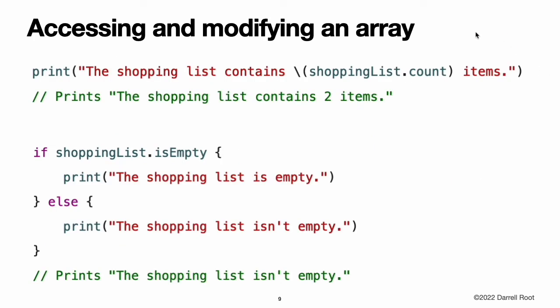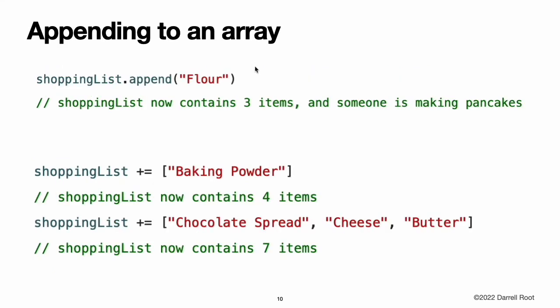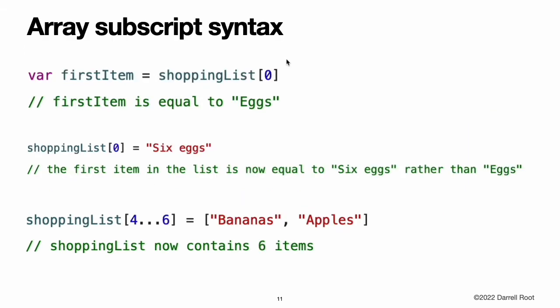Accessing and Modifying an Array. You can access and modify an array through its methods and properties or by using subscript syntax. To find out the number of items in an array, check its read-only count property. Use the boolean isEmpty property as a shortcut for checking whether the count property is equal to zero. You can add a new item to the end of an array by calling the array's append method. Alternatively, append an array of one or more compatible items with the addition assignment operator. Retrieve a value from the array by using subscript syntax, passing the index within square brackets. Note: the first item in the array has an index of zero, not one. Arrays in Swift are always zero-indexed.